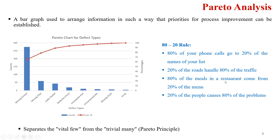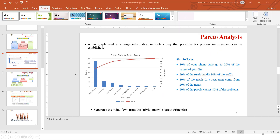It is not compulsory that you always apply the 80-20 rule. You may apply 70-30, 75-25, or 90-10. The main concern of Pareto analysis is to separate the vital few from the trivial many. Therefore, by focusing on the vital few, we would be able to solve our main problems.